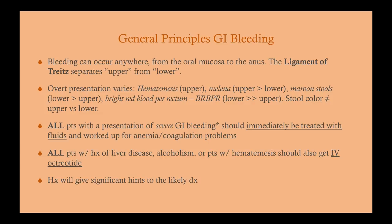Technically, we define upper versus lower GI bleeding by the ligament of Treitz: upper is anything above it, and lower is anything distal to it. The ligament of Treitz is a thin muscle connecting the duodenal-jejunal flexure, along with connective tissue surrounding the celiac and superior mesenteric artery — essentially a suspensory ligament holding up the duodenal-jejunal junction. It also plays a role in early embryology and proper rotation of the gut. But this is anatomic minutia, because without endoscopy we don't really know where the bleeding is coming from.